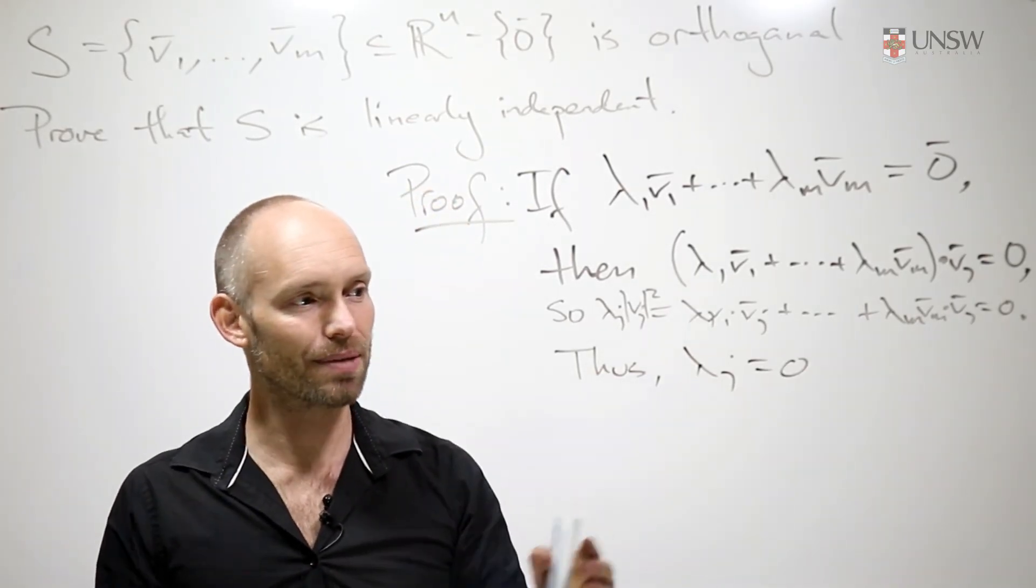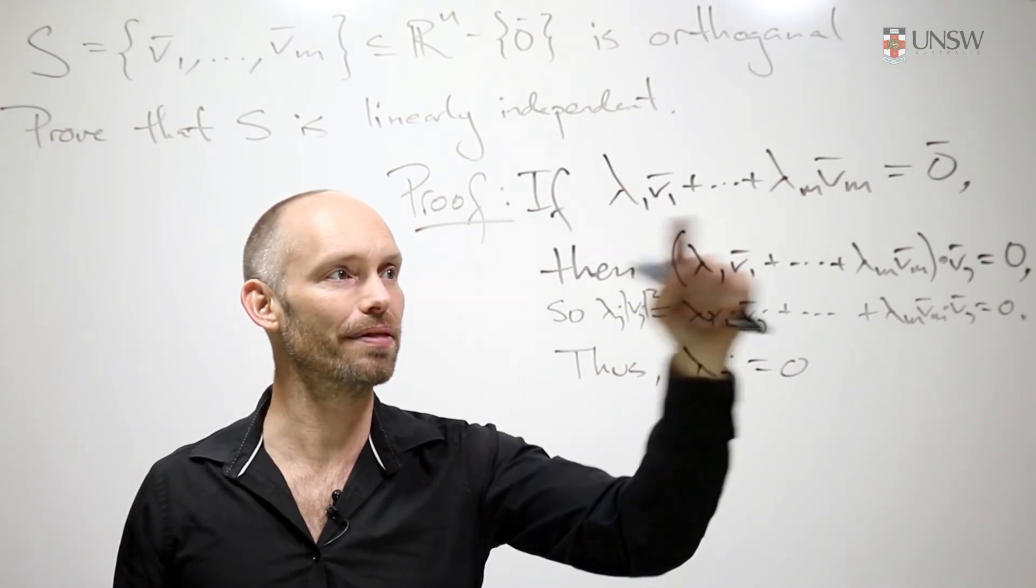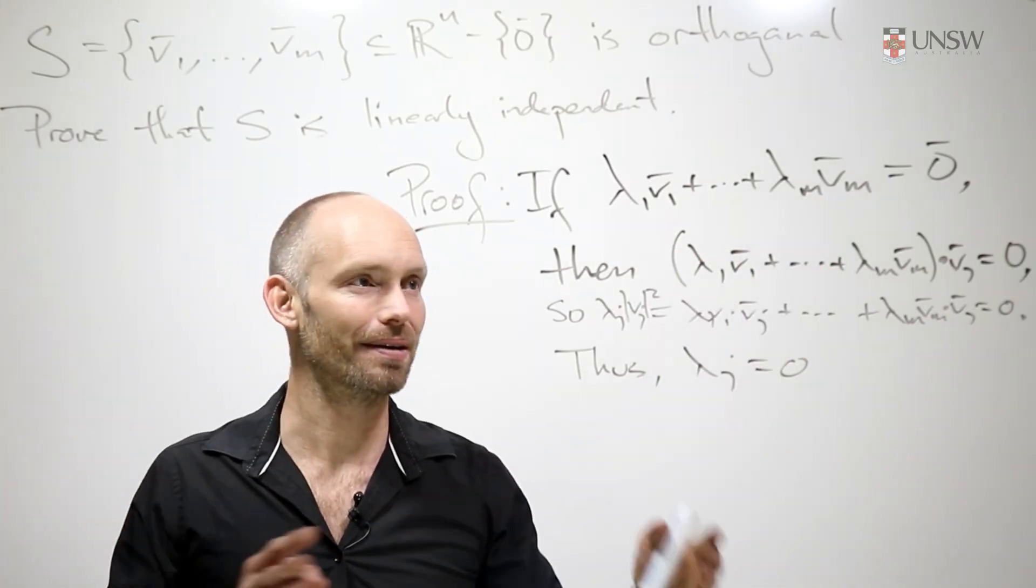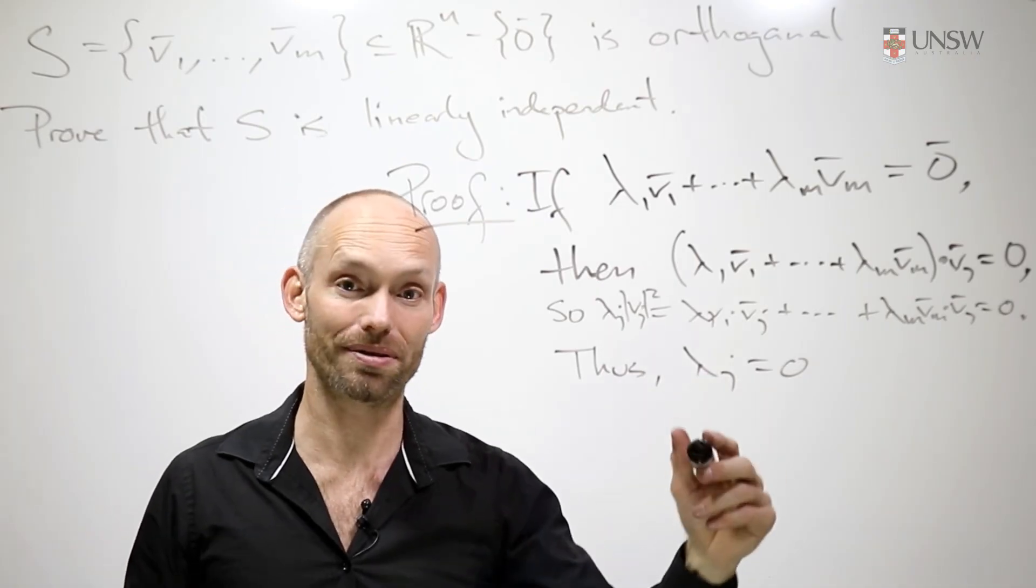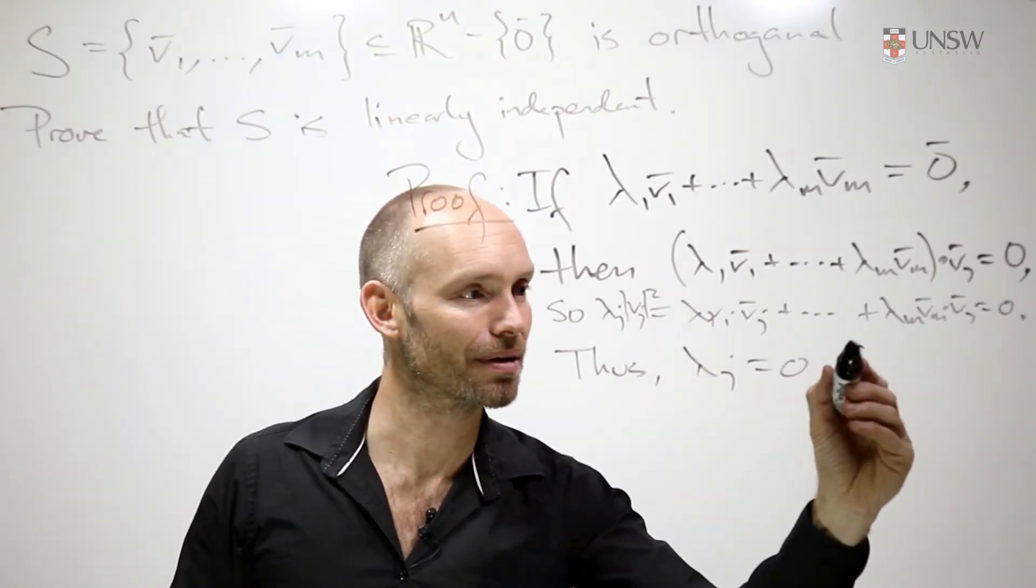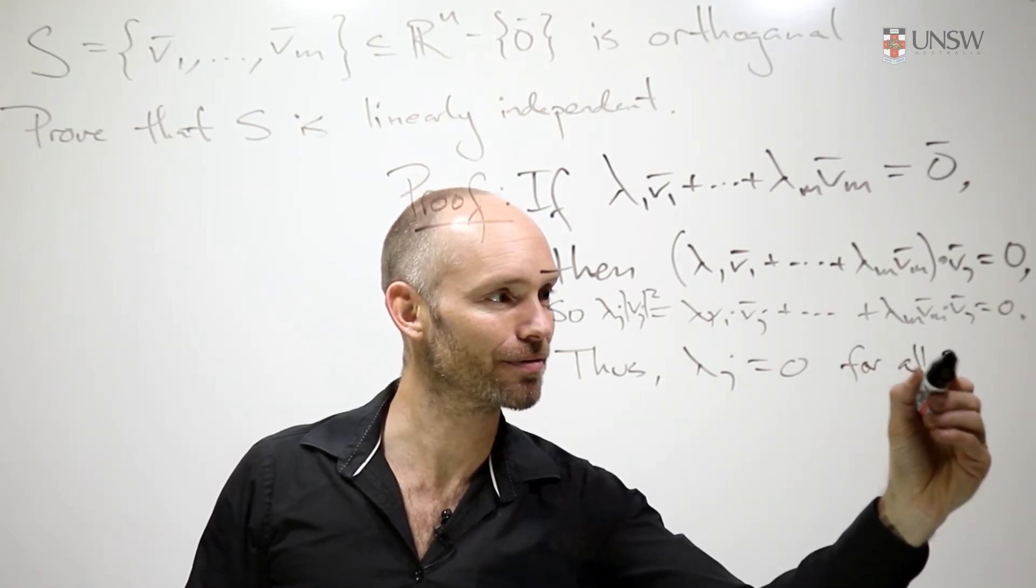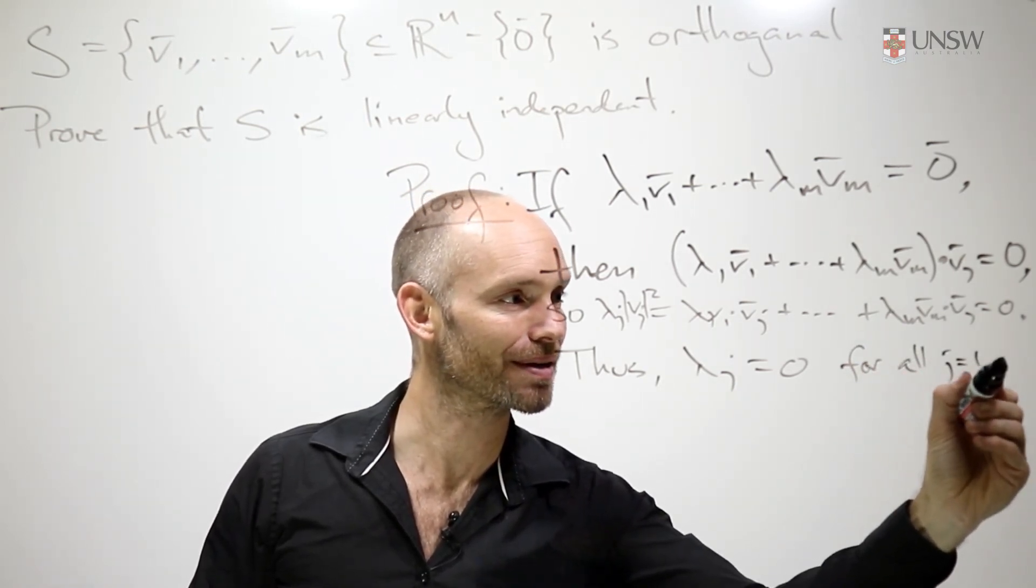So now, what is λ_j? Well, λ_j could be any of these lambdas here. j could be 1, 2, 3, up to m. It doesn't matter which one we chose. This conclusion is correct regardless of which j we chose. So for all j from 1 to m.